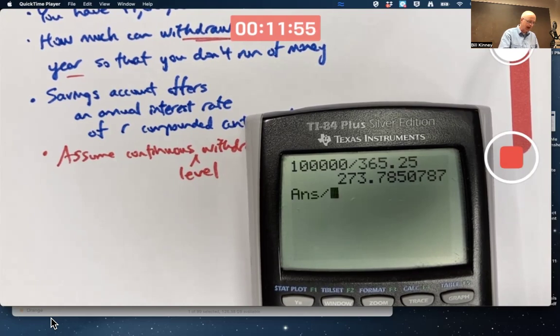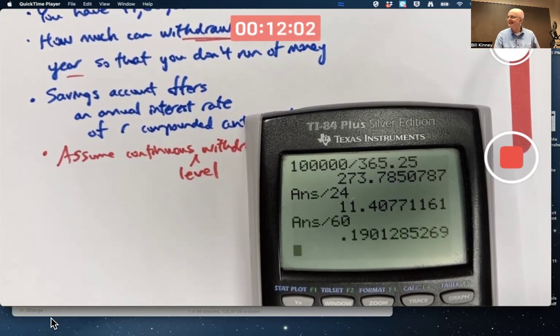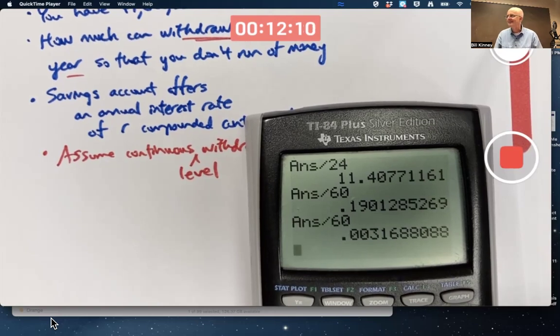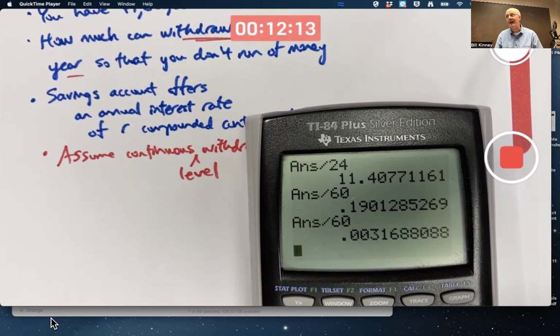Divide by 60. 19 cents every minute. Divide by 60 again. About close to one-third of one cent every second. Or one cent every three seconds or so is the rate that money would need to be coming into your account or you'd need to withdraw from that savings account, say, to your checking account to have it be a continuous withdrawal rate of $100,000 every year.